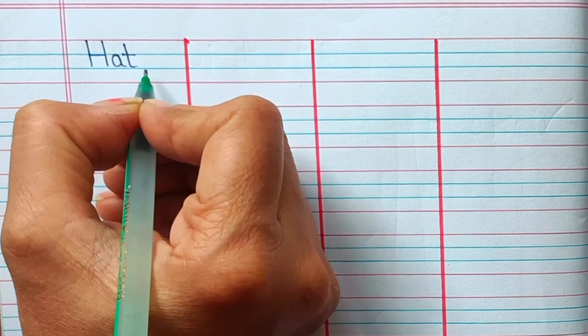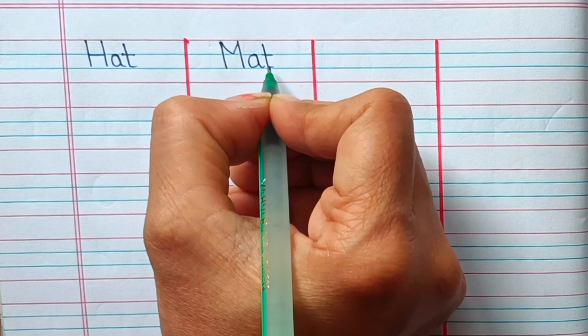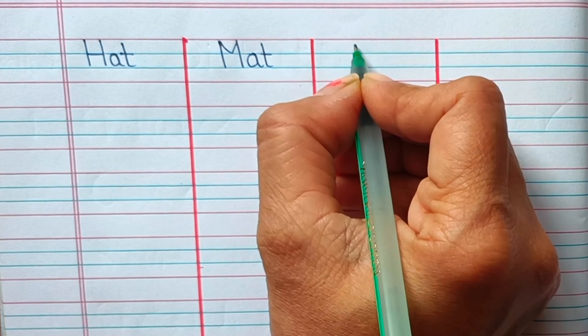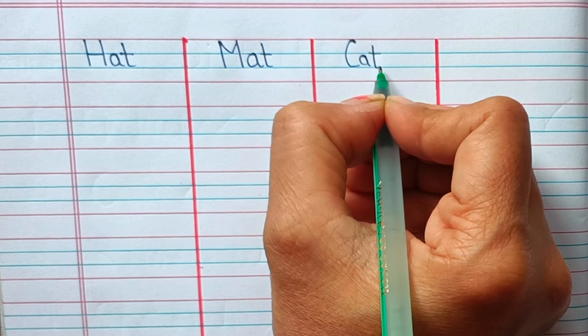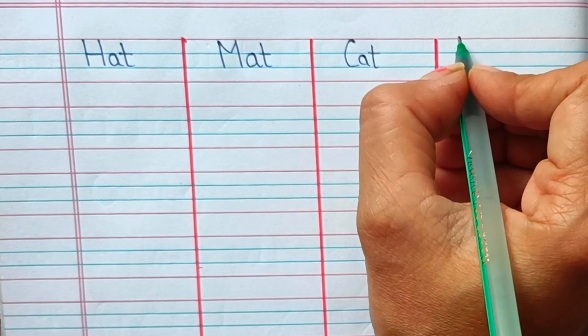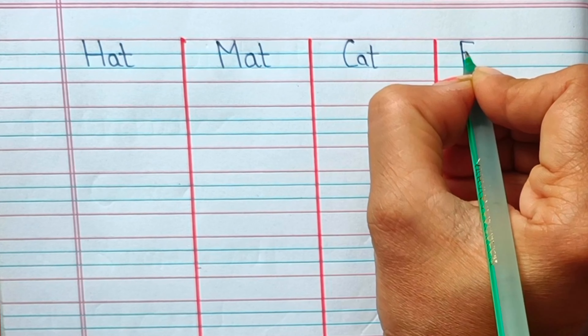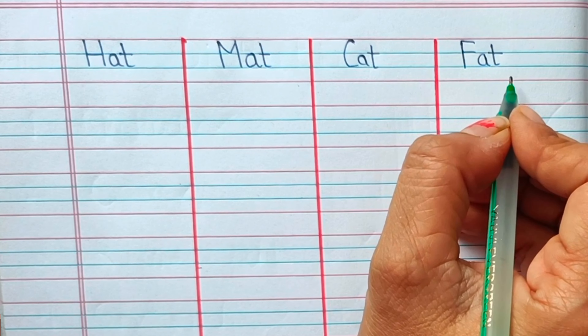Mat, cat, fat, head — three letter words with the short vowel pattern.